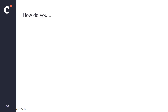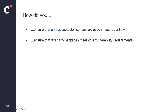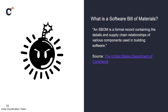Right now, if you're using Python models in dbt, can you answer these questions? Are you using any packages that have licensing issues? Do any of your third-party packages have critical vulnerabilities that open you up to attack vectors? And can you ensure that an SBOM is created to represent your dbt project? A software bill of materials is a formal record containing the details and supply chain relationships of various components used in building software — essentially an ingredients list for your dbt project.